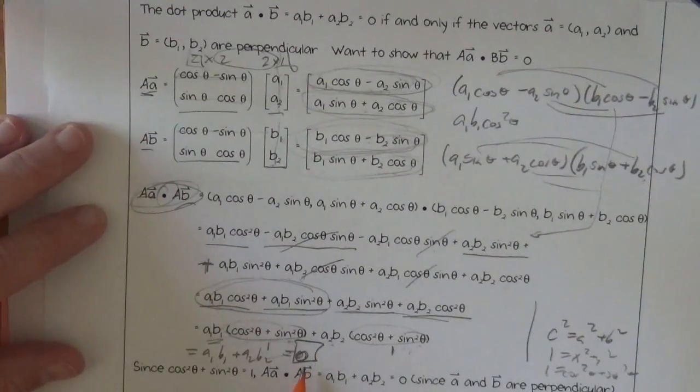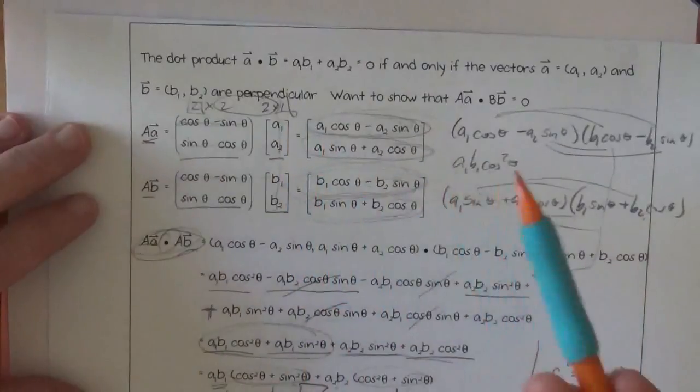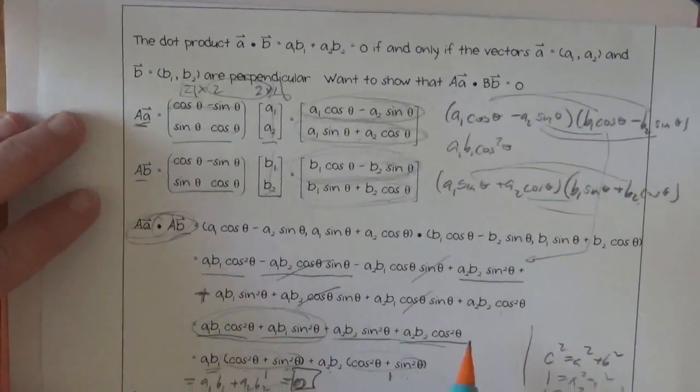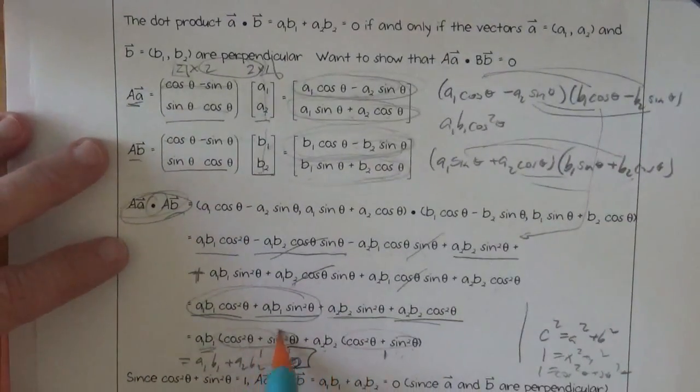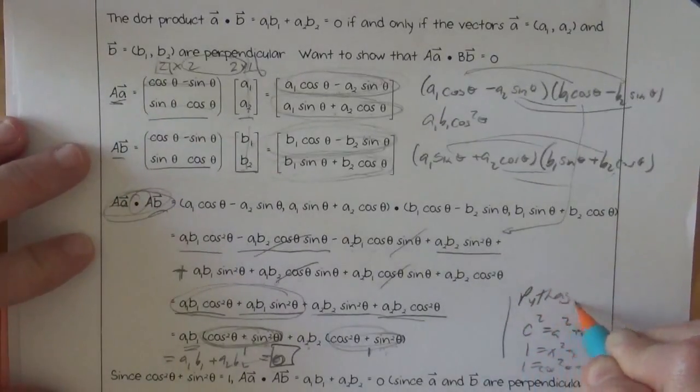So just what you always wanted to know. Main idea is just that if things are perpendicular, their dot product is 0. Matrix multiplication, big messy dot products. Simplify, simplify, simplify. This guy here equals 1 from your Pythagorean identities. And there you have it.